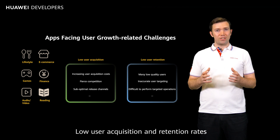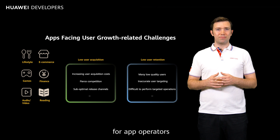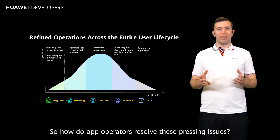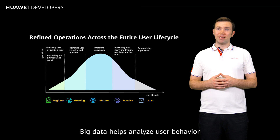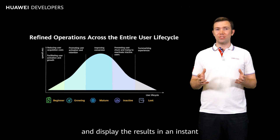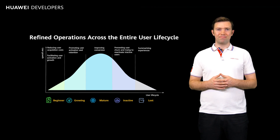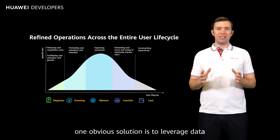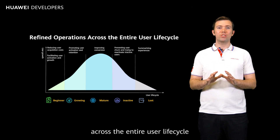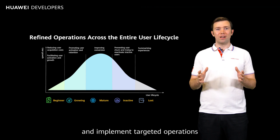Lower user acquisition and retention rates have been long-standing challenges for app operators. So how do app operators resolve these pressing issues? Big data helps analyze user behavior and display the results in an instant, giving you a thorough understanding of user needs at a glance. One obvious solution is to leverage data to search for growth opportunities across the entire user lifecycle and implement targeted operations.